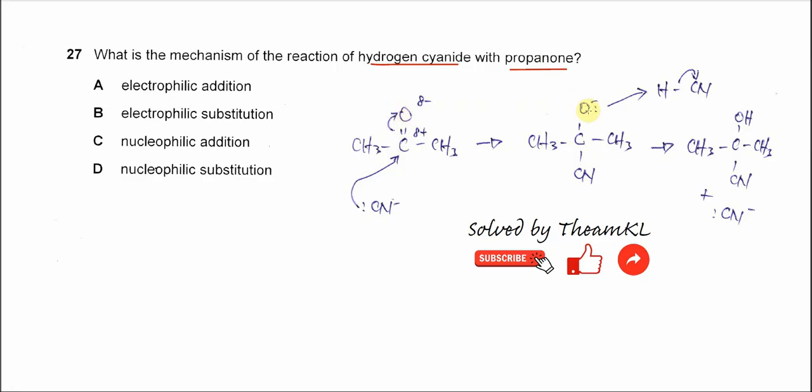This part, the oxide, will get another proton from the HCN and it will form the OH group here.